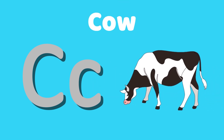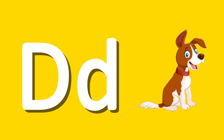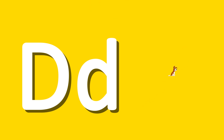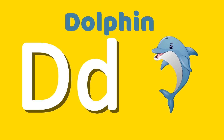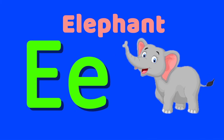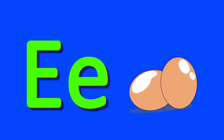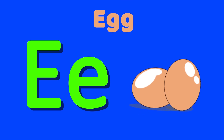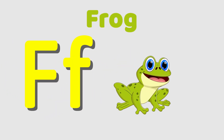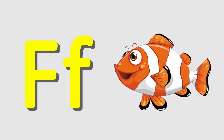D for cow, D for dog, D for dolphin. E for elephant, E for egg. F for frog, F for fish.